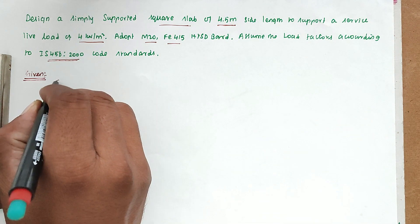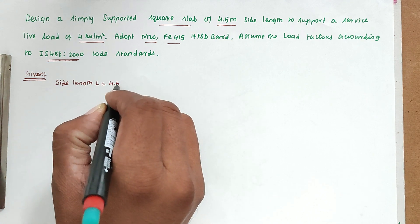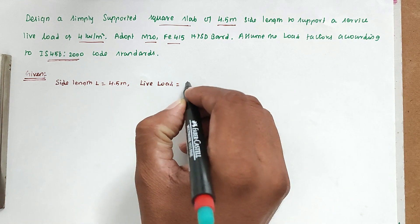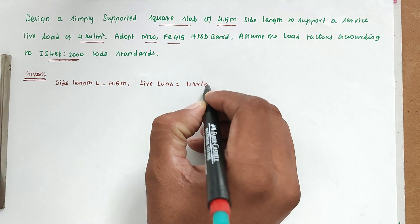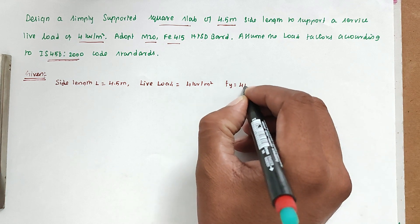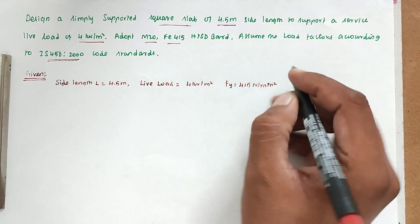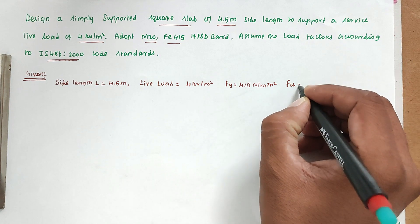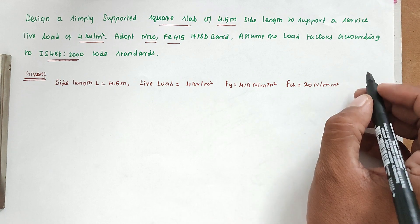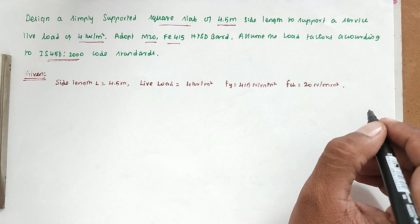Given data: Side length L = 4.5 m. Live load = 4 kN/m². fy = 415 N/mm². fck = 20 N/mm². These are all the values given, and we have to design the square slab.